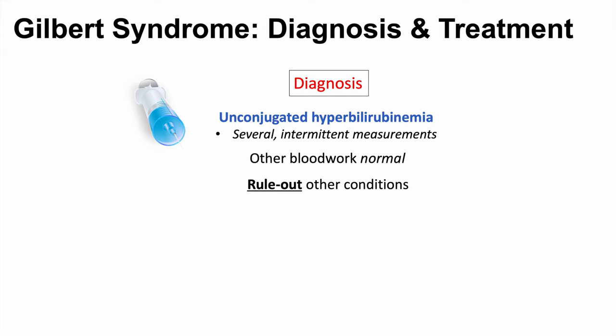It is also important to rule out other conditions such as liver disease and hemolysis. Once Gilbert syndrome is diagnosed, there is actually no treatment required — this is a benign condition. Individuals will have recurrent episodes of jaundice that eventually resolve. Teaching the patient about triggers is important. Diagnosis is confirmed by several intermittent measurements of unconjugated hyperbilirubinemia with normal other blood work and other conditions ruled out.